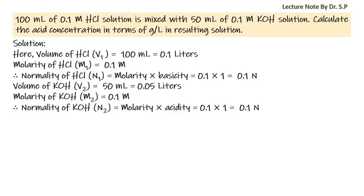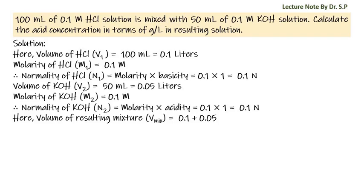The volume of the resulting mixture V_mixture is equal to 0.1 plus 0.05 — where volume of hydrochloric acid is 0.1 liters and volume of potassium hydroxide is 0.05 liters — so the resulting volume is equal to 0.15 liters.